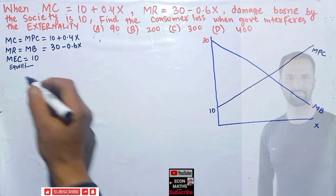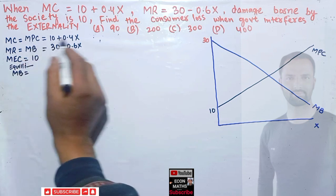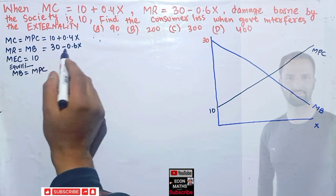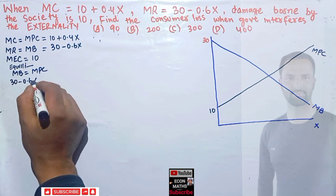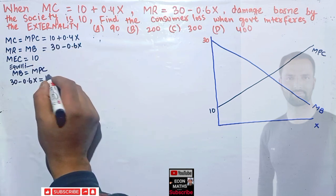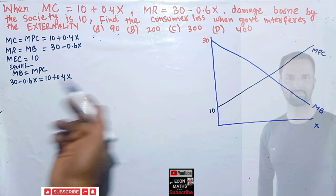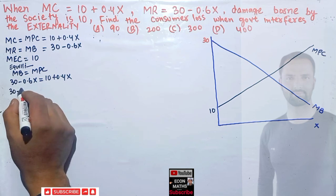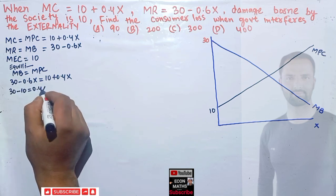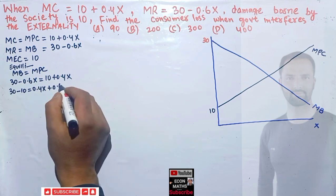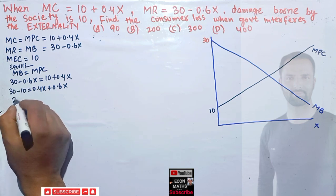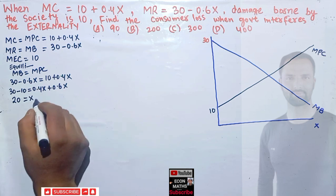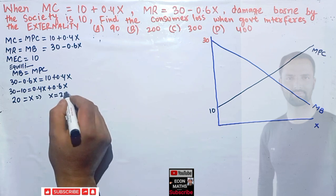Initially, equilibrium requires marginal benefit equal to marginal private cost: 30 minus 0.6x equals 10 plus 0.4x. Transposing like terms: 30 minus 10 equals 0.4x plus 0.6x, which gives us 20 equals x. So our initial equilibrium output is 20 units.